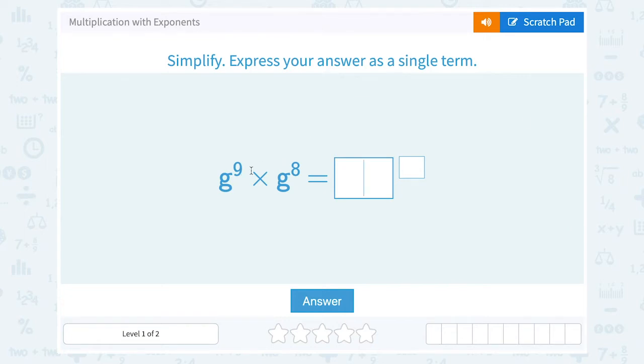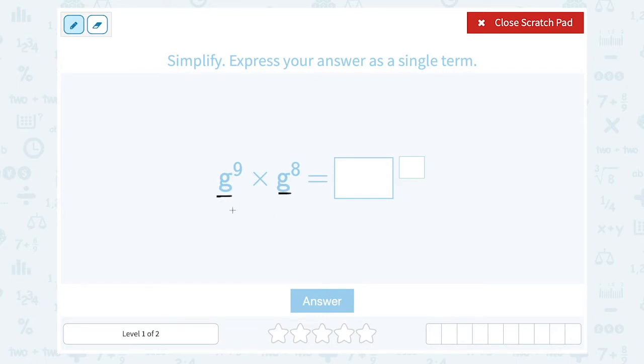We have g to the 9th times g to the 8th. Notice the bases are the same, they're both g. When your bases are the same, you can add your exponents. Because g to the 9th would mean we're writing g out, or multiplying g out 9 times, and g to the 8th would mean we're multiplying g out 8 times.